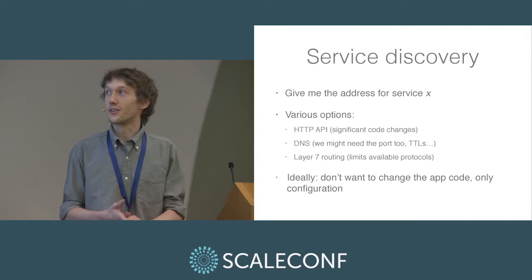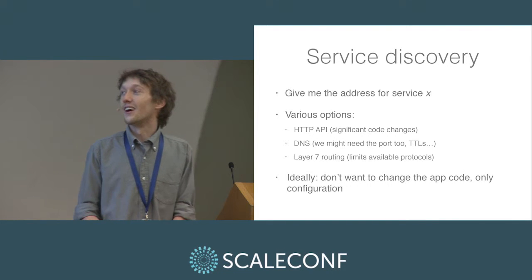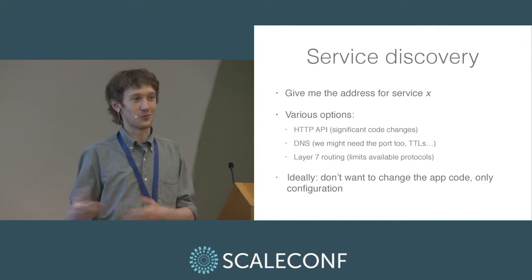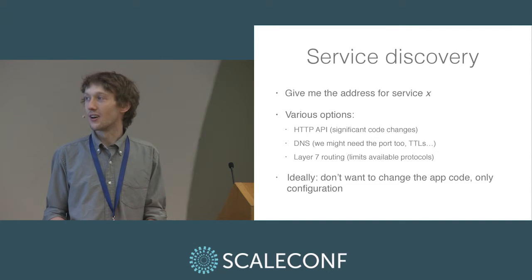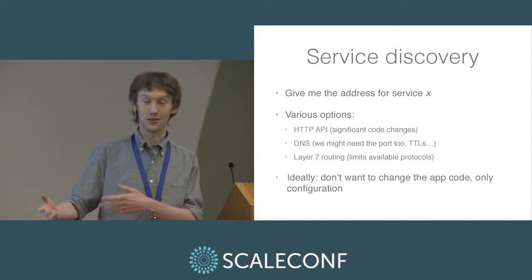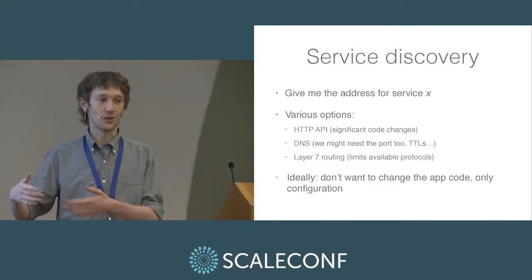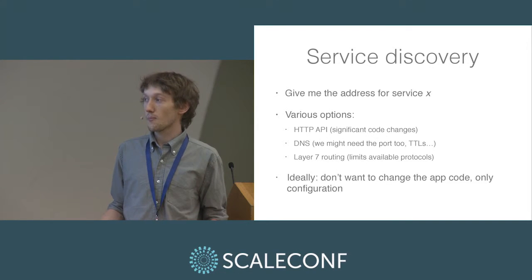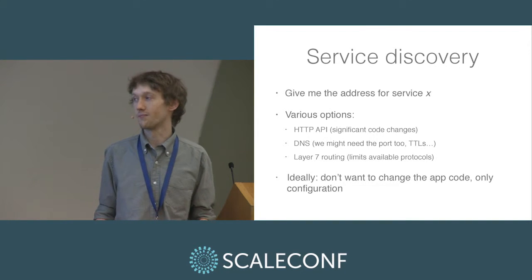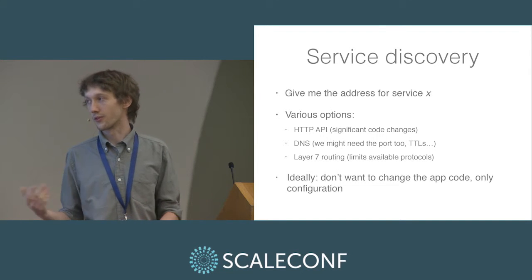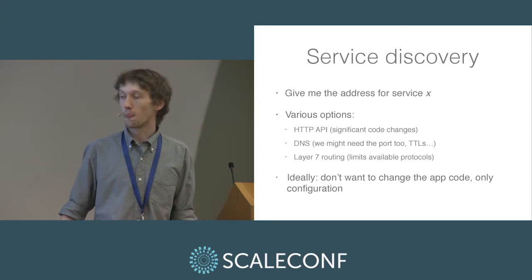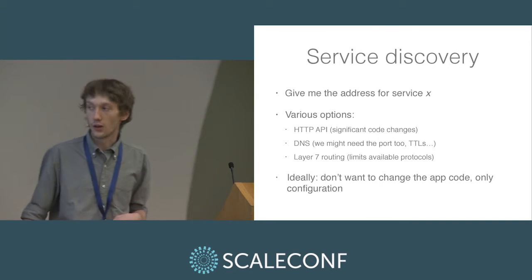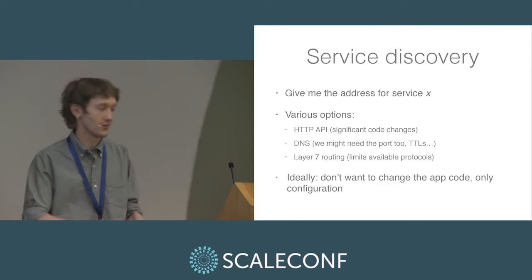On to service discovery — this can basically be summarized as: give me the address for service X. There are various ways of doing this. The first is having an API that knows where things are, which requires you to change something in your app to query that API. Then there's DNS — you need SRV records to get ports, and there are questions of what TTL value to set since containers may go out of existence pretty quickly. Then again, routing works around this problem and routes to the correct container, but it limits what protocols you can use because the router has to speak the protocol. Overall, ideally you don't want to have to change your app — you just want to change the configuration.